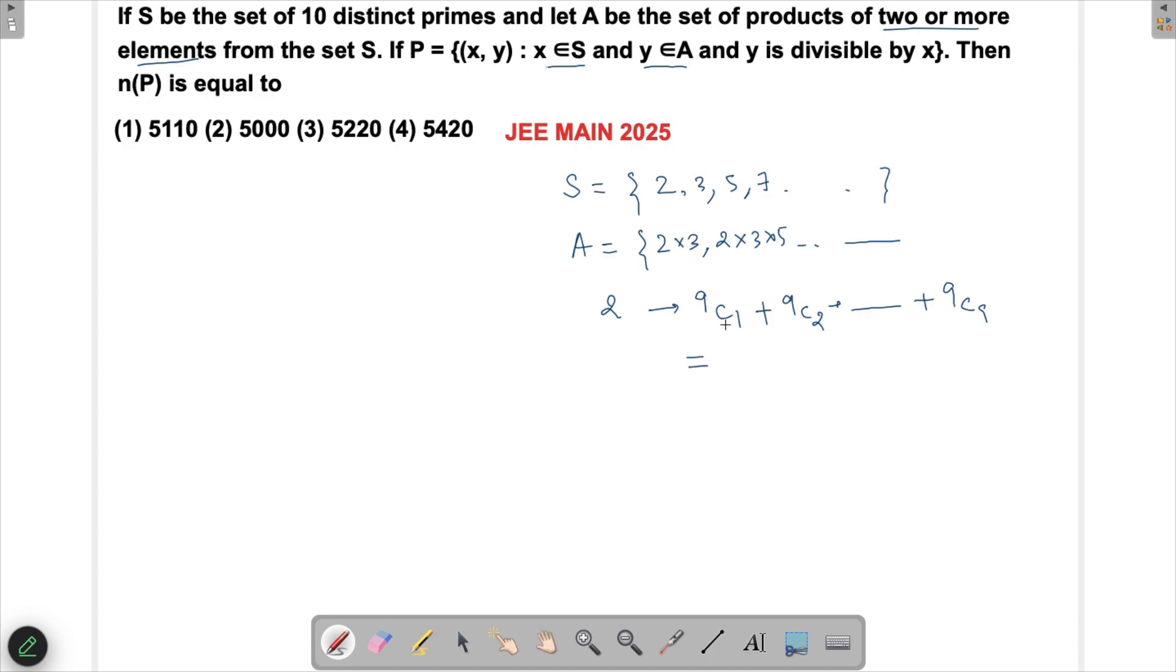This is the summation of the binomial coefficient. I could add 9C0 and then subtract 9C0, so this will become 2^9, and then 2^9 minus 1.